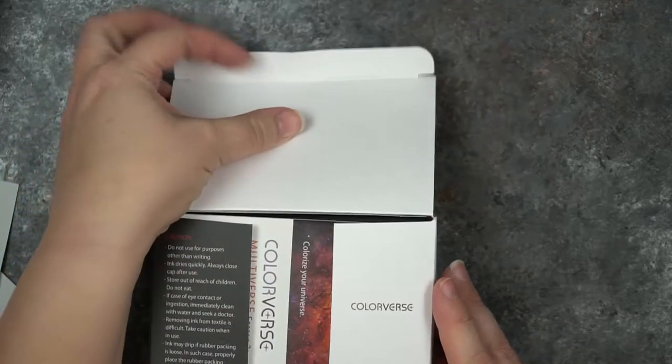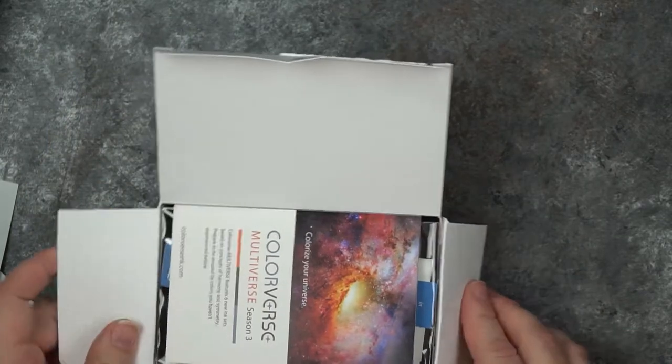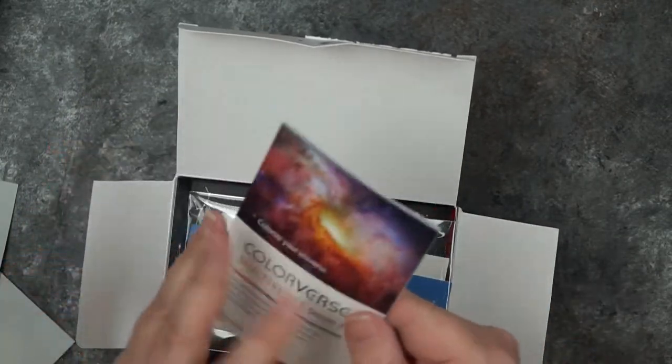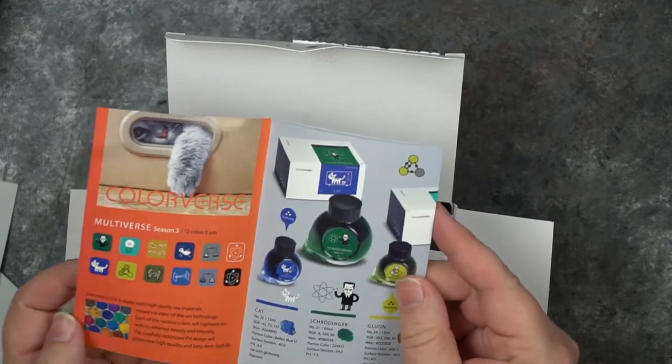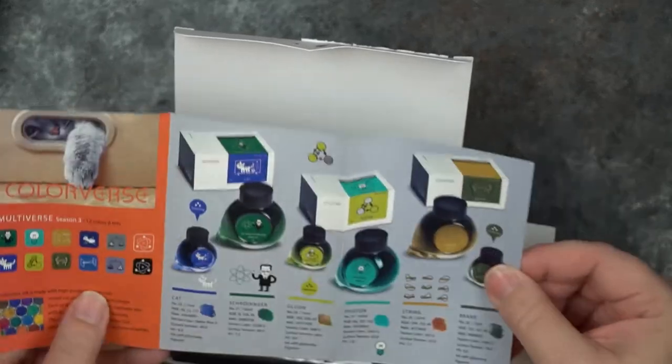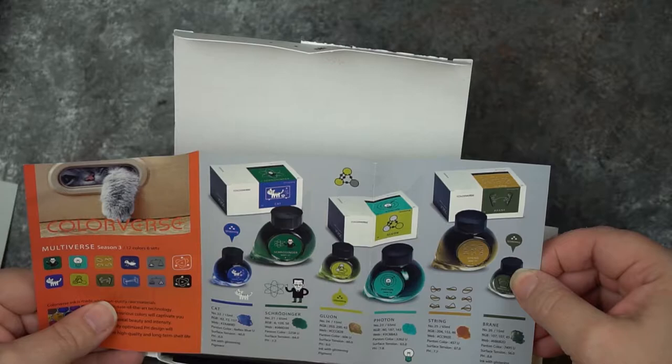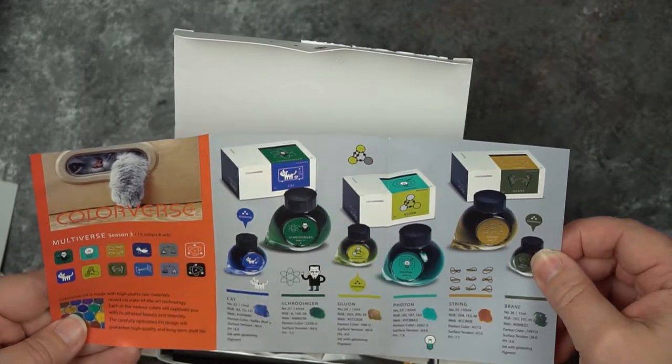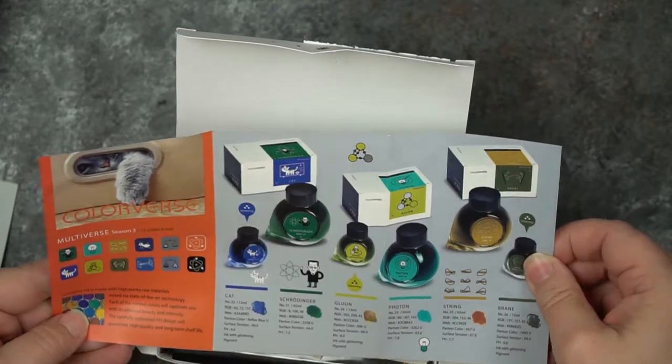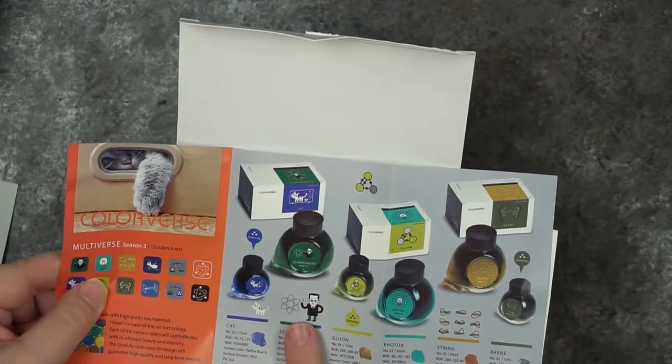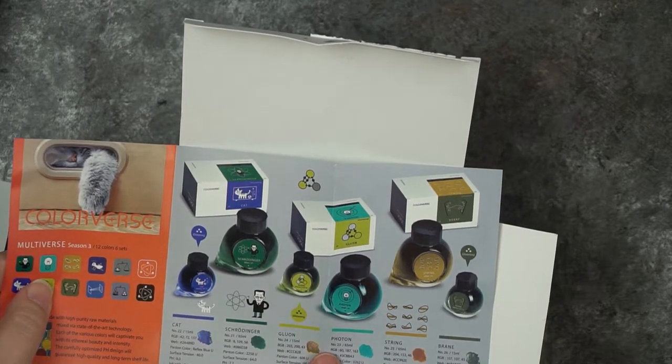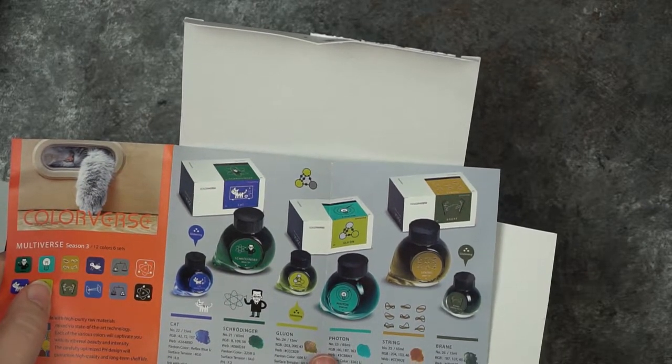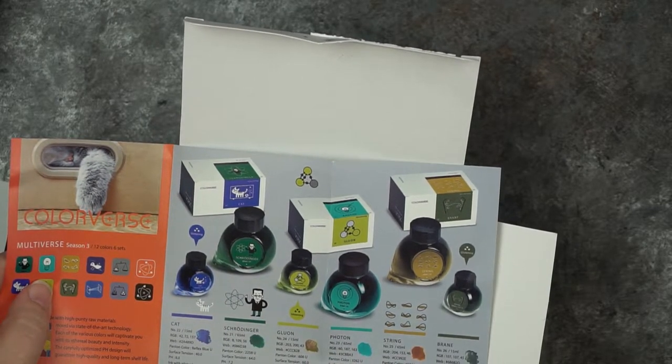These are pricey inks, they're $36, but they come with tchotchkes. They come with a brochure that has more information about them. So, these are the colors that I got. This is season three. I got the Schrodinger's Cat and then I got the Gluon and Photon, but I did not get the String in Brain.